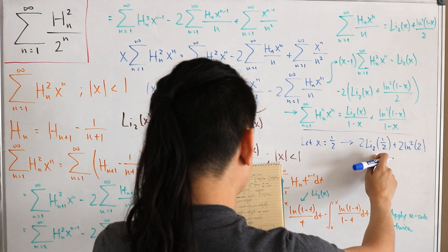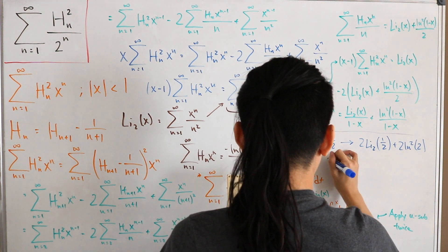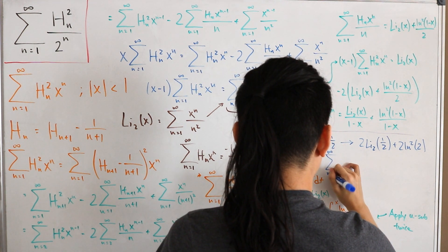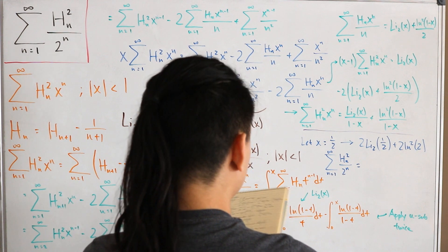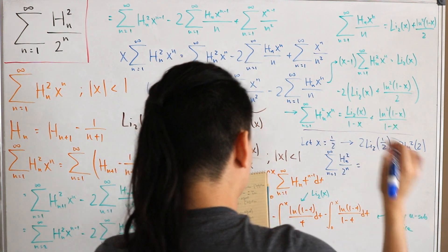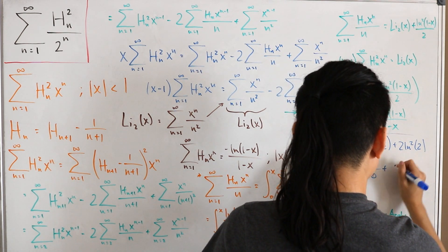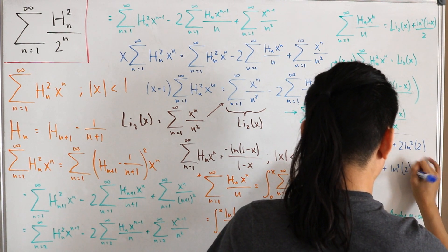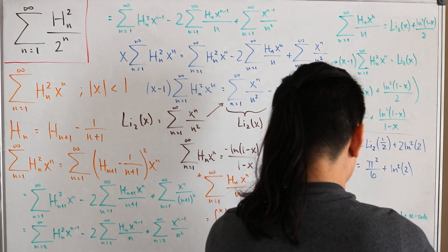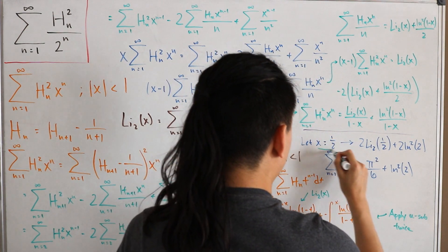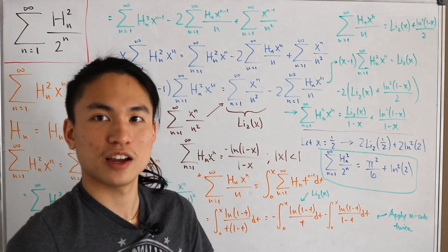Substituting Li₂(1/2) = π²/12 − ln²(2)/2 and simplifying, our infinite sum Σ H_n²/2ⁿ equals π²/6 + ln²(2). And that is the final answer to this harmonic number infinite sum evaluation — a pretty cool result with a lot of nice pieces coming together.